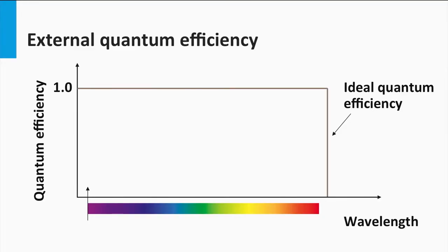Let's say we have a material with band gap E_gap. The ideal external quantum efficiency would look like this graph. Note that the horizontal axis is plotted in wavelength. Smaller wavelengths correspond to higher energetic photons — the blue spectral part — while longer wavelengths correspond to lower energetic photons — the red spectral part. Above the band gap all photons result in a collected electron, or in other words the EQE is 1 or 100%. In reality, the EQE is always smaller than 100% and its value varies with wavelength.